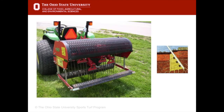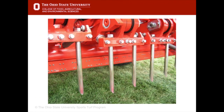Solid and hollow tine machines are also available that can punch holes deep into the profile. Sometimes referred to as vertidraining or deep tining, the tines have a kicking action when they exit the soil, creating cracks and fissures in the soil profile. Some of the tines can reach down as deep as 16 inches.